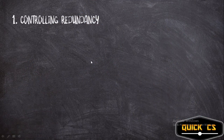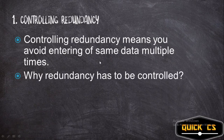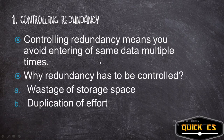Let's look at storage advantages. The first is controlling redundancy. What is redundancy? Redundancy is basically when you enter the data twice. There are three reasons why you have to control it: first, wastage of storage space; second, duplication of effort; and third, inconsistent data.